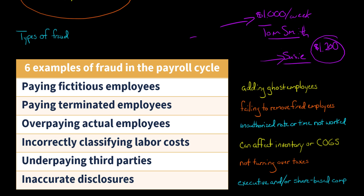Now we're talking about actual employees being paid at either an unauthorized rate — for example, they're supposed to make $20 an hour but are actually being paid $25 — or being paid for time they didn't work. So they're claiming they worked 40 hours when in fact they only worked 25. We'll talk more in the videos to come about how you would go about dealing with that, but that's a potential issue.